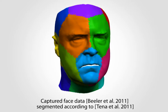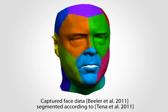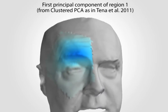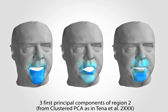Clustered PCA tries to localize components by segmenting the mesh and performing separate PCA on each region. The resulting components themselves are not usable directly — an explicit blending step is required to remove seams on the borders. Inside one region, components are still tightly coupled.